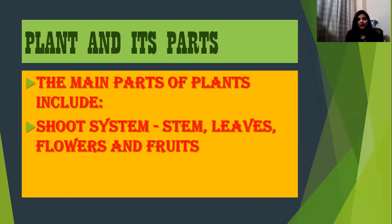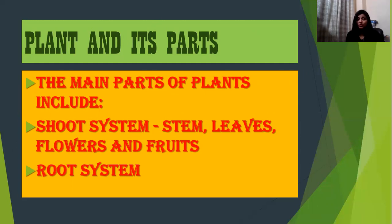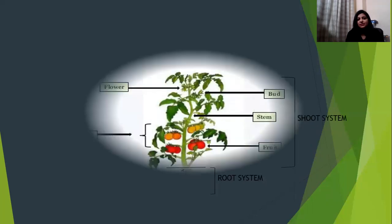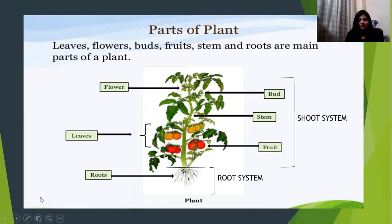The main parts of the plant include the shoot system, which includes stems, flowers, leaves, and fruits, and a root system which lies usually below the ground. I used the word 'usually' because there are certain roots which lie above the ground — for example, aerial roots. If you've ever seen the Bargat ka Per, or the banyan tree, the roots grow above the ground and hang from the branches; those are called prop roots. Here is a diagram showing the root system and the shoot system, which includes fruits, stem, buds, flowers, and leaves.